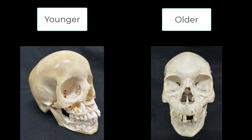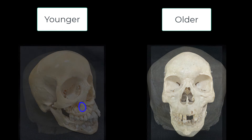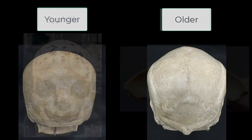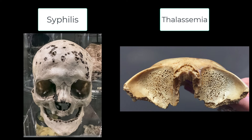Skeletal remains can also indicate age. More youthful skeletons can be gauged by stages of dental eruption and epiphyseal closure, while older skeletons exhibit progressively more fused cranial sutures. Conditions such as the sexually transmitted infection syphilis and the inherited blood disorder thalassemia can also influence the skeleton's appearance.